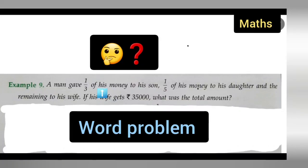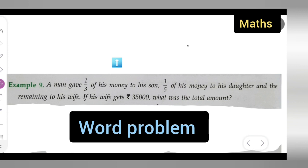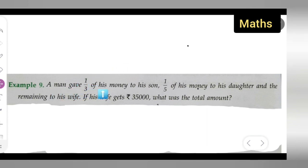Welcome to today's class of mathematics. Today's question is taken from class 7 mathematics. The question is: A man gave 1/3 of his money to his son, 1/5 of his money to his daughter, and the remaining to his wife. If his wife gets ₹35,000, what was the total amount?